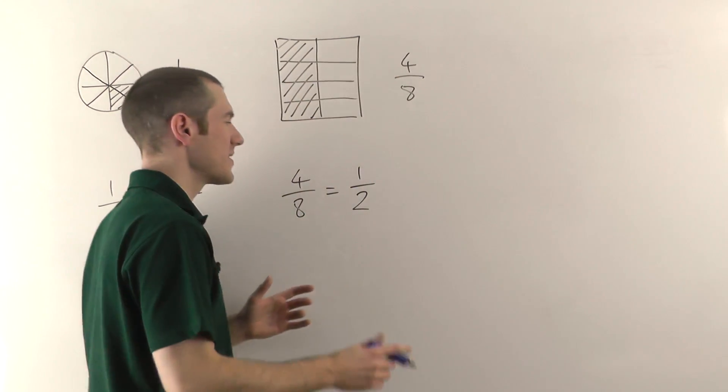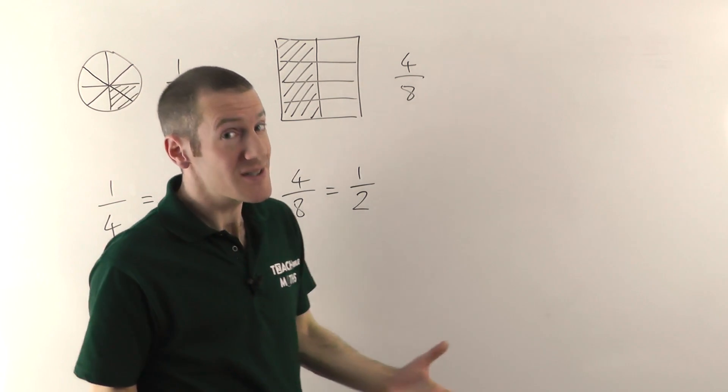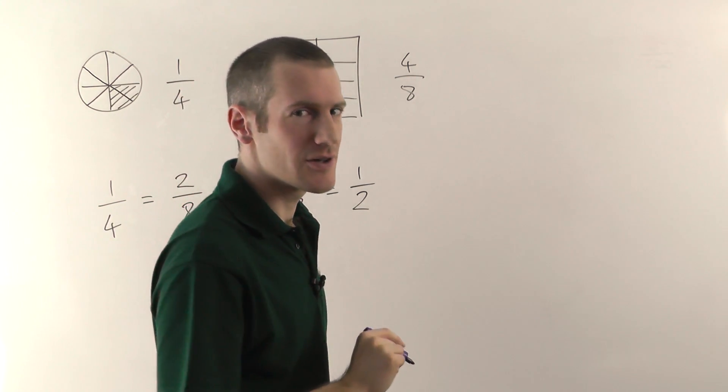Now one other thing, a lot of people tend to think the number on the top of a fraction is always smaller than the number on the bottom. Now most of the time that is true, but sometimes it's not. Let me show you.